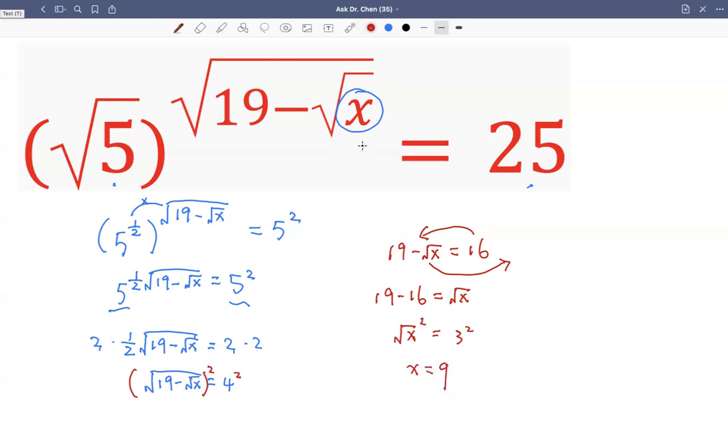Let me check and see if we go back to the equation. We see if x equals to 9, square root of 9 is 3. 19 minus 3 is 16. Square root of 16 is 4. Then square root of 5 raised to the 4th power is indeed 5 squared, which is 25.